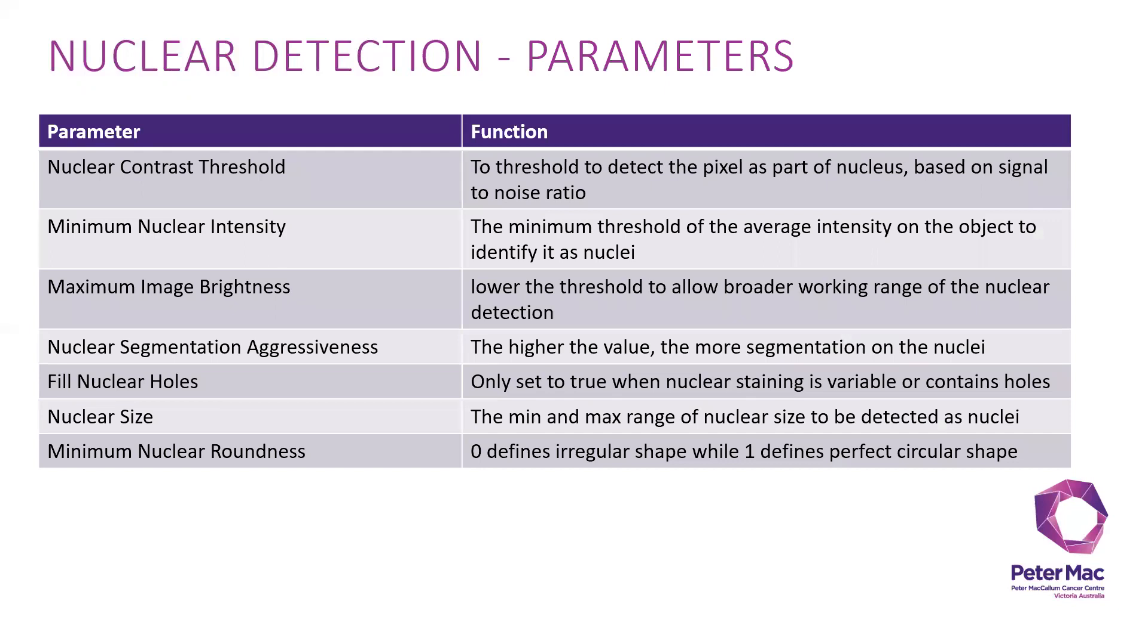It has seven different parameters that you can play with to adjust the accuracy of the nuclear detection. First, the nuclear contrast threshold adjusts to detect the pixel as part of the nucleus based on signal to noise ratio. You adjust the minimum nuclear intensity to threshold the average intensity on the object to identify it as a nuclei.